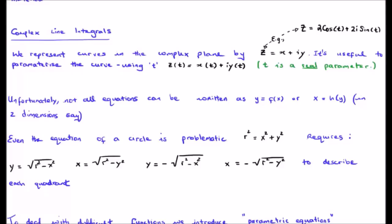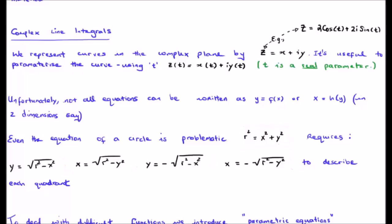Not all equations can be written very easily as y as a function of x, or x as a function of y, in two dimensions. For example, the equation of a circle, r squared equals x squared plus y squared — in order to even plot this, we need to rewrite it in four different ways, which is not very useful and is quite problematic. This motivates us to introduce something called a parameter. So it's useful to parameterize a curve using a parameterization variable.